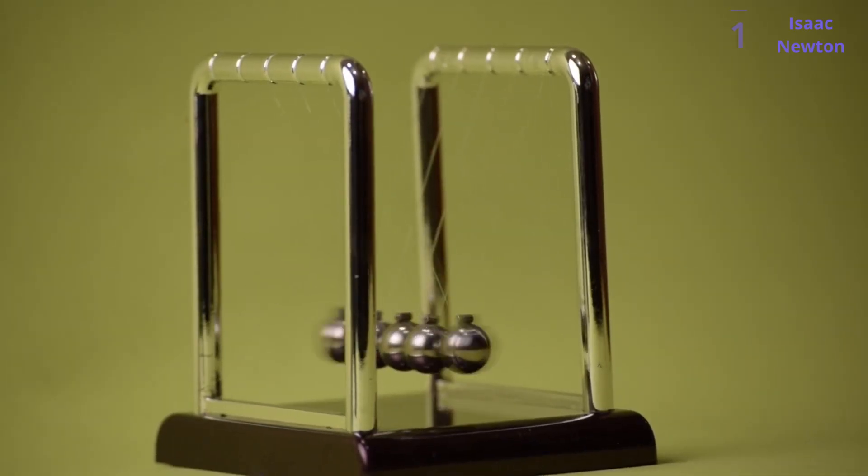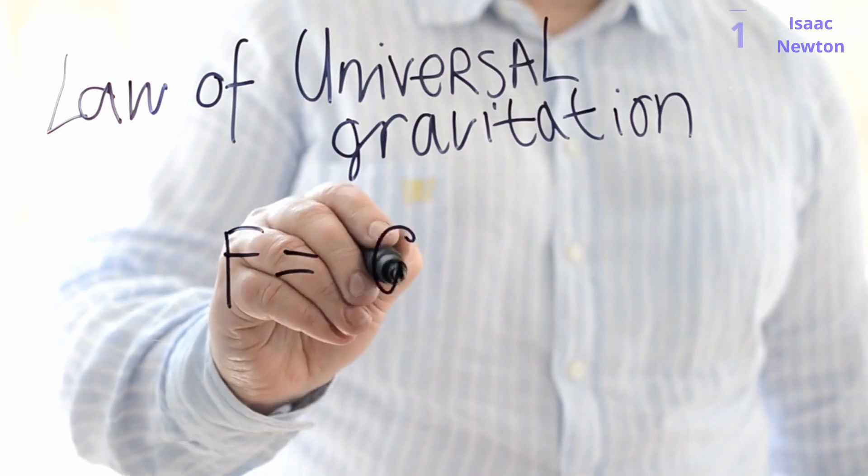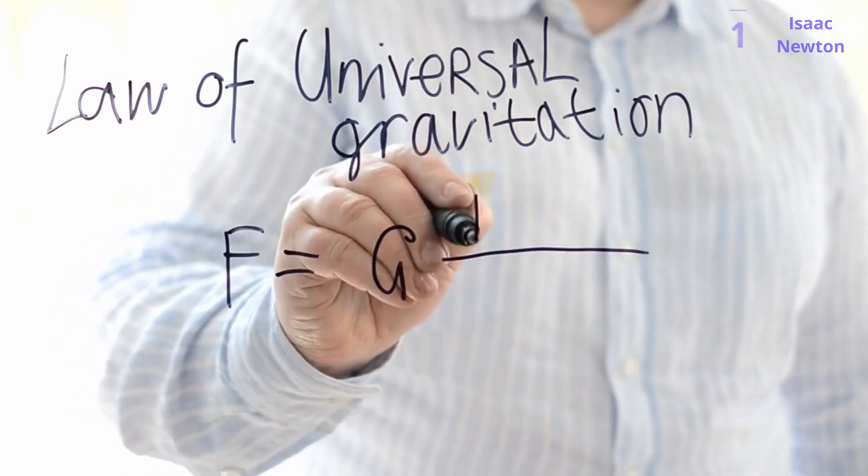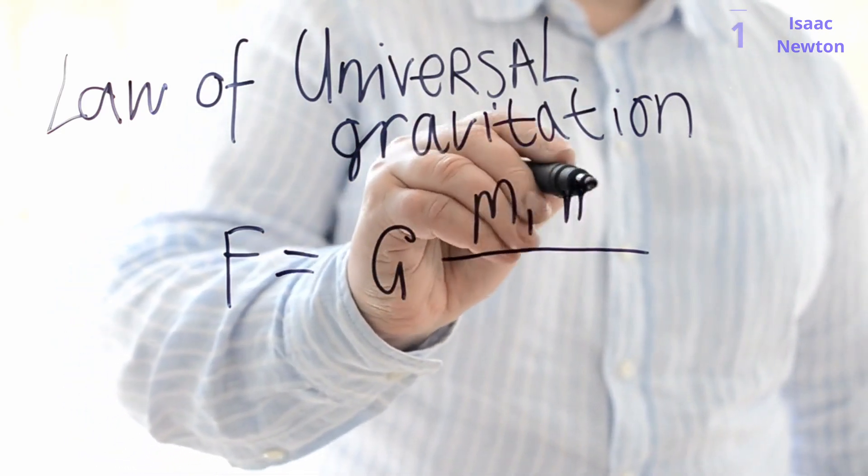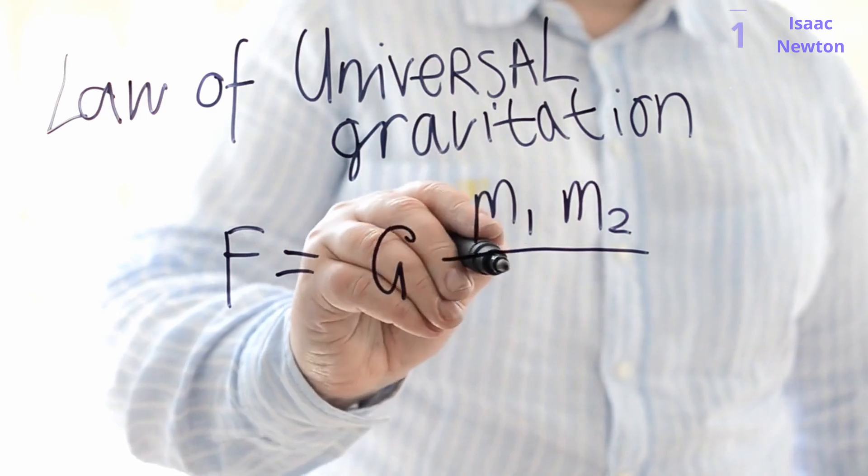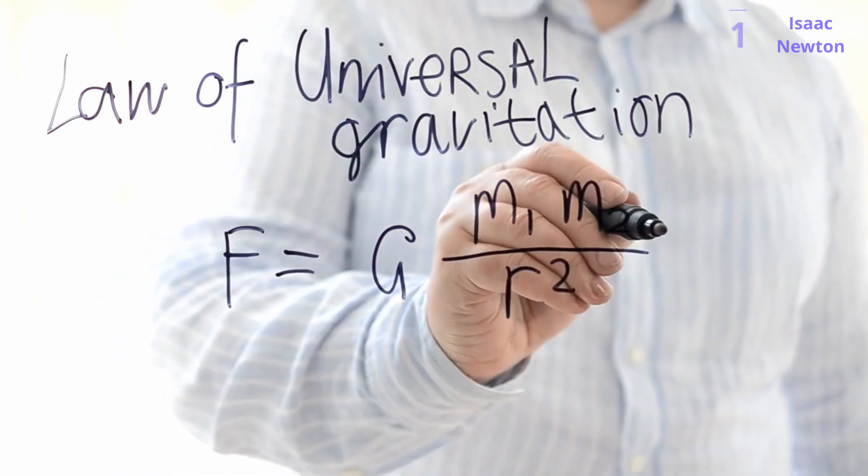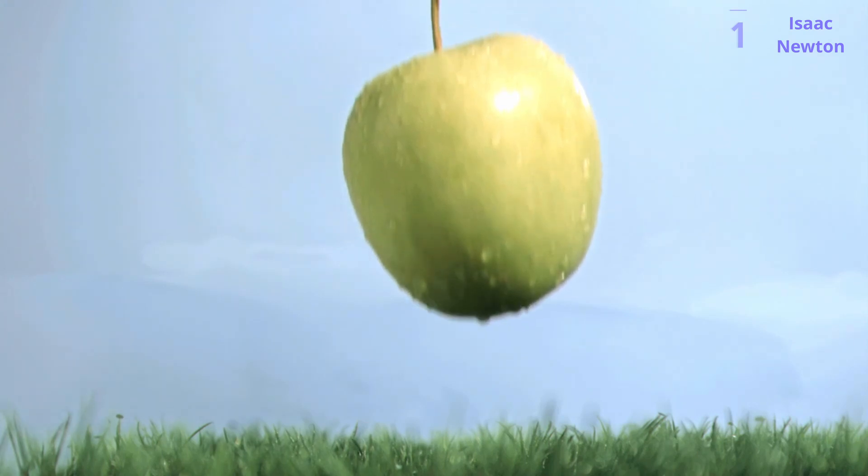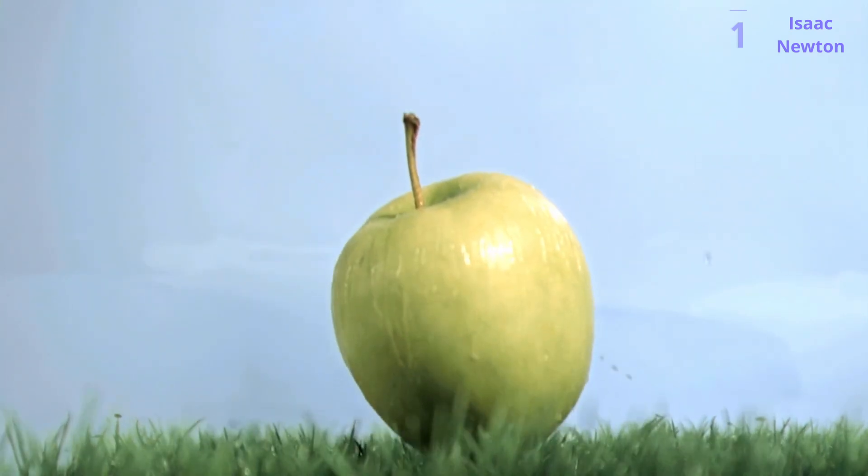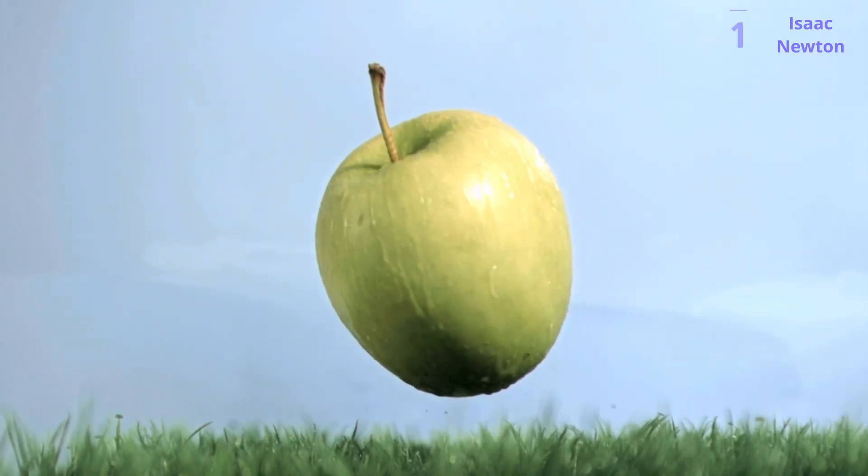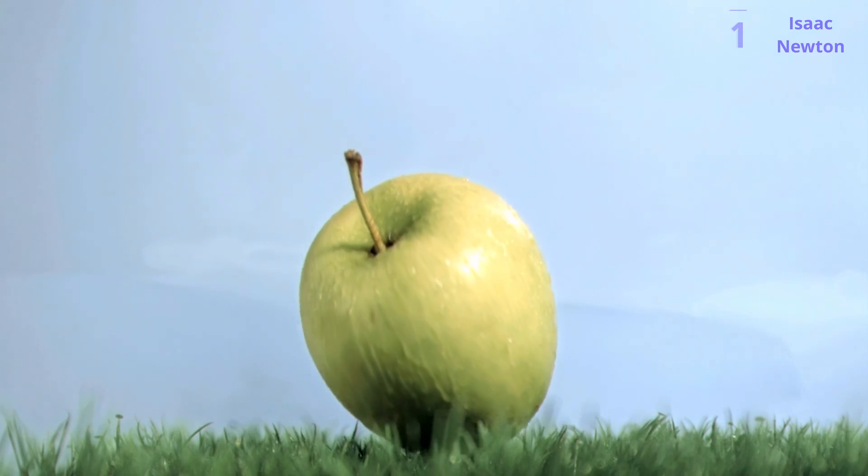Before Newton, gravity was a vague concept. He proposed the law of universal gravitation, stating that every object in the universe attracts every other object with a force proportional to their masses and inversely proportional to the square of the distance between them. This single, elegant law explained the fall of an apple to the ground and the motion of planets around the sun, unifying celestial and terrestrial motion under one principle.